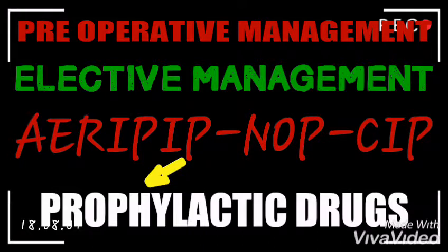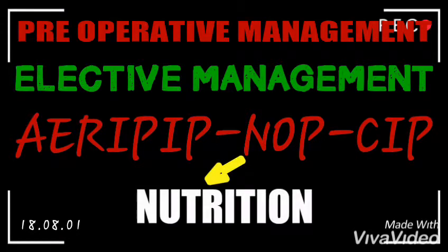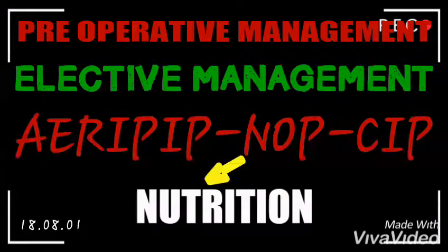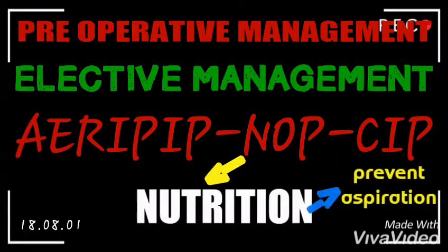The next part is Prophylactic Drugs — these are the antibiotics you give to the patient while they are waiting for the due date of the operation. Then there is Nutrition: the patient should be deprived of anything to eat or drink for between six to eight hours before surgery. This is to prevent aspiration while the patient is being operated on in the theater.